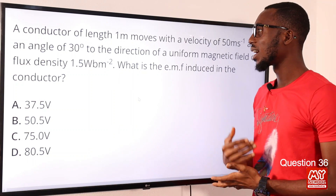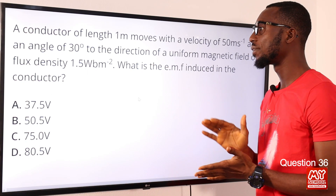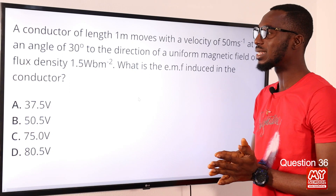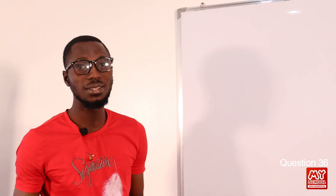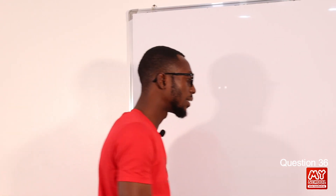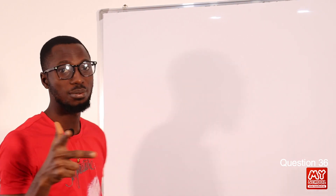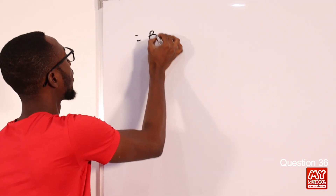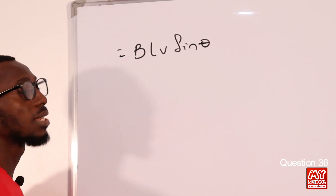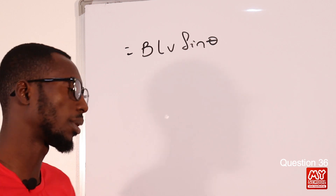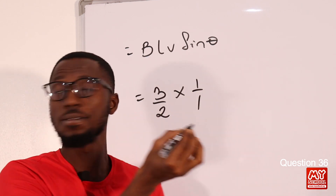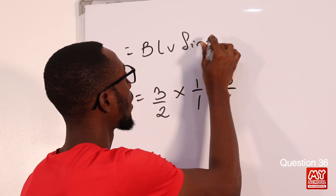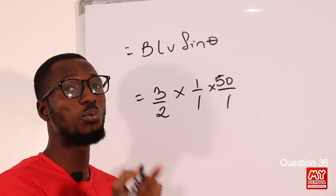Question 36: A conductor of length 1 meter moves with a velocity of 50 m/s at an angle of 30° to the direction of a uniform magnetic field of flux density 1.5 Wb/m². We need to find the induced EMF. The direction is given by Fleming's right-hand rule. The formula is: EMF = Blv sinθ. Here B = 1.5, l = 1 m, v = 50 m/s, and θ = 30°, so sin 30° = 0.5.